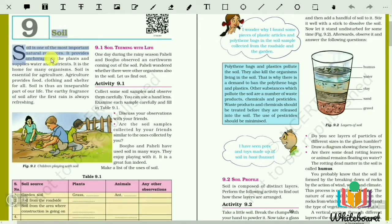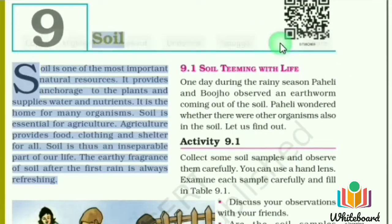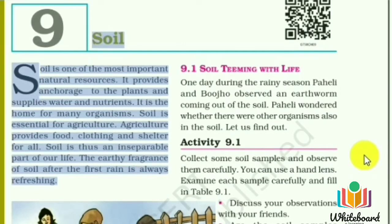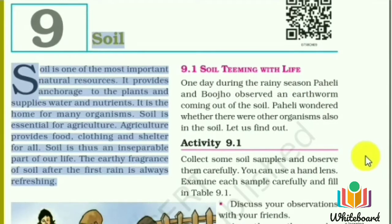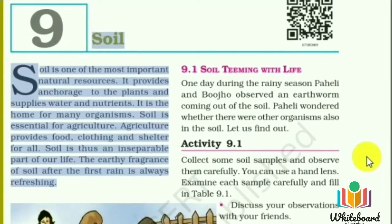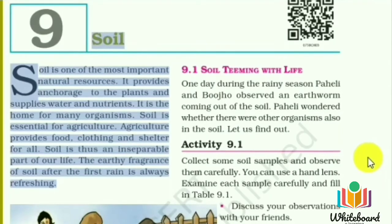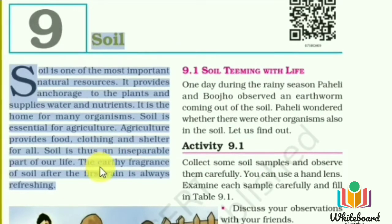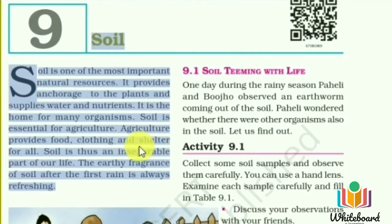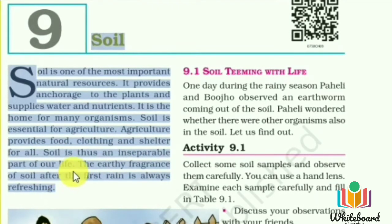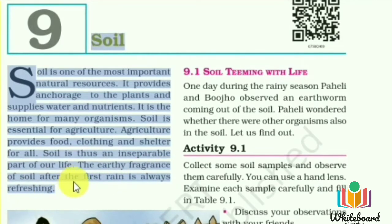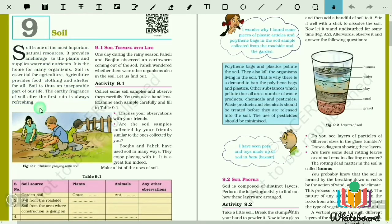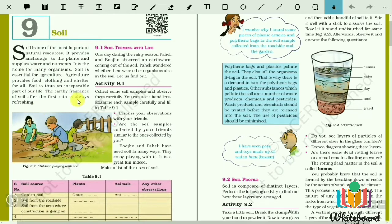Reading from the book: Soil is one of the most important natural resources. It provides anchorage to plants and supplies water and nutrients. It is the home for many organisms. Soil is essential for agriculture, and agriculture provides food, clothing, and shelter for all. Soil is thus an inseparable part of our life. The earthy fragrance of soil after the first rain is always refreshing.